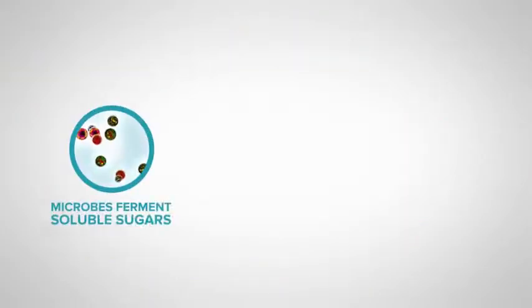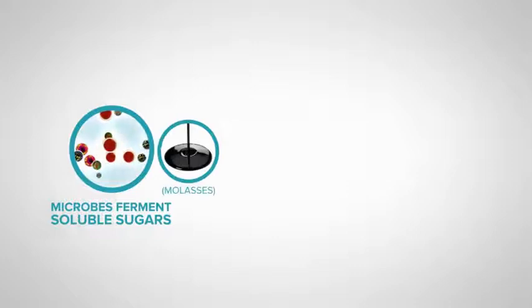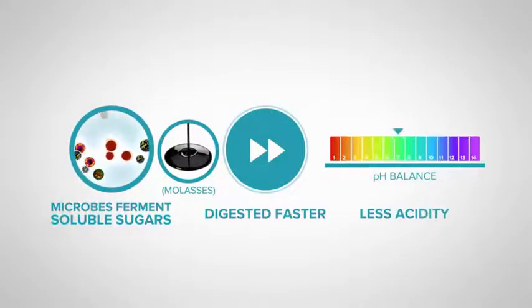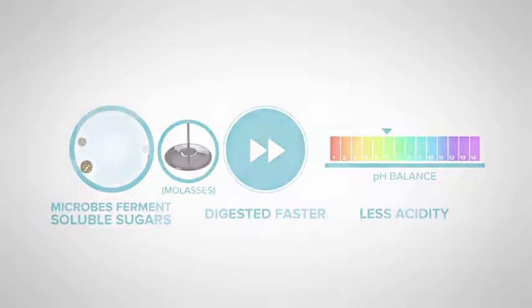Finally, the microbes that ferment soluble sugars, a carbohydrate that is high in feeds such as molasses, are similar to those that digest starch. However, these feeds are generally digested at a faster rate, and cause less problems with increased acidity in the rumen.